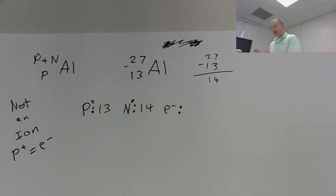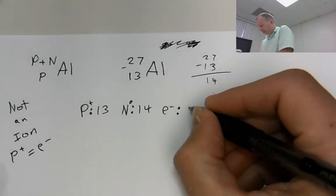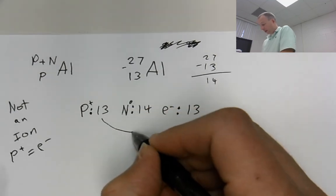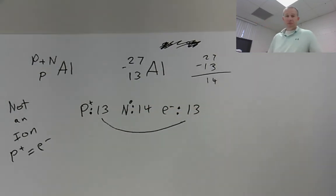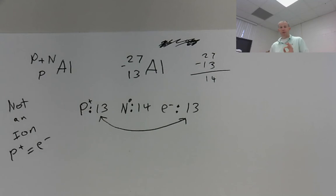That means that the positive charge is equal to the negative charge present. So you would just say, oh, if you have 13 protons, you have 13 electrons. They're the same. Simple as that. All right. So in the end, if it's not an ion, the protons and the electrons, they add up to be the same number.